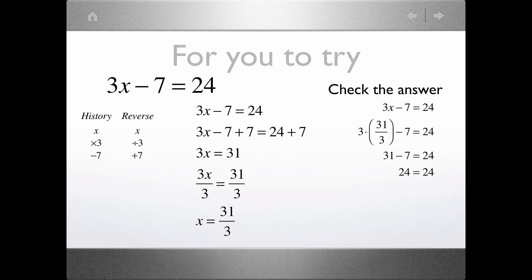For the first problem, 3x minus 7 equals 24. The history: x is multiplied by 3, then 7 is subtracted. The inverse and reverse is adding 7, then dividing by 3. We add 7 to each side to get 3x equals 31, then divide each side by 3 to get x equals 31 thirds. Checking: 3 times 31 thirds minus 7 equals 31 minus 7 equals 24. That is correct.